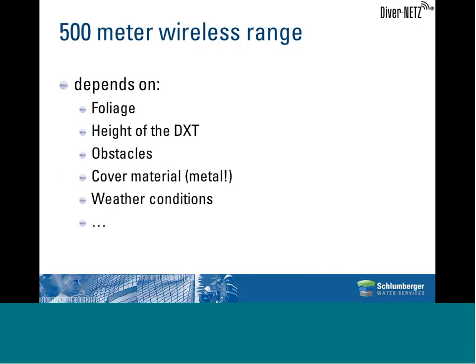We claim a 500-meter wireless range, and that's true when in line of sight—meaning there's no obstacle between the DXT and the DiverGate. The range will be limited or reduced by several factors such as foliage, placement of the DXT below ground surface, and other obstacles like cars.